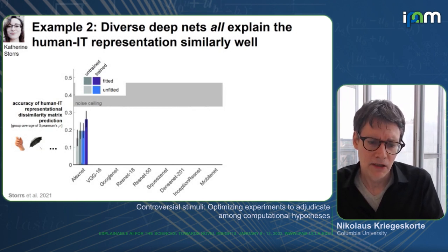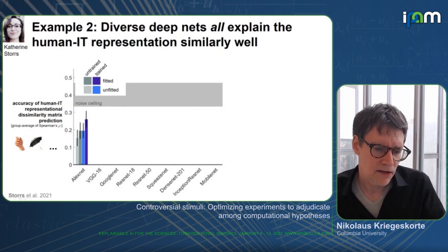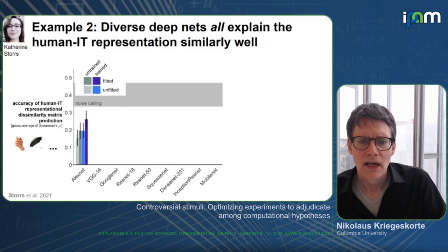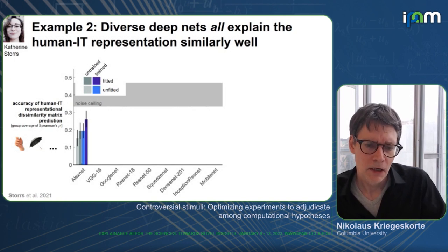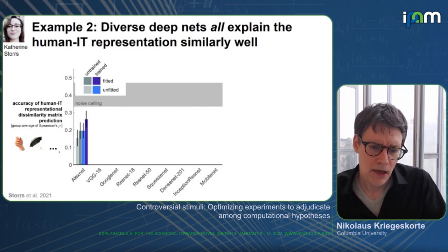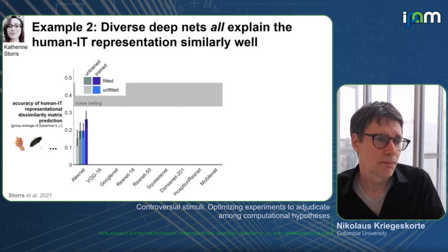We used each deep net model to predict the representational geometry and then compare it to the geometry measured in humans. We have a noise ceiling here and looked at different versions for each architecture: untrained and trained, fitted and unfitted. Training refers to training on object categorization; fitting refers to fitting to explain the human IT representational geometry. Both training and fitting help make the match to human IT representational geometry better.